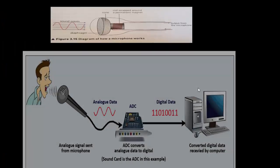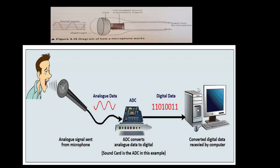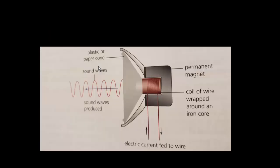An analog signal is sent into the microphone, fed into the analog to digital converter — which would be a sound card in this example — and it turns it into zeros and ones, which are then stored on the computer. You need an analog to digital converter to store sound on a computer with a microphone.